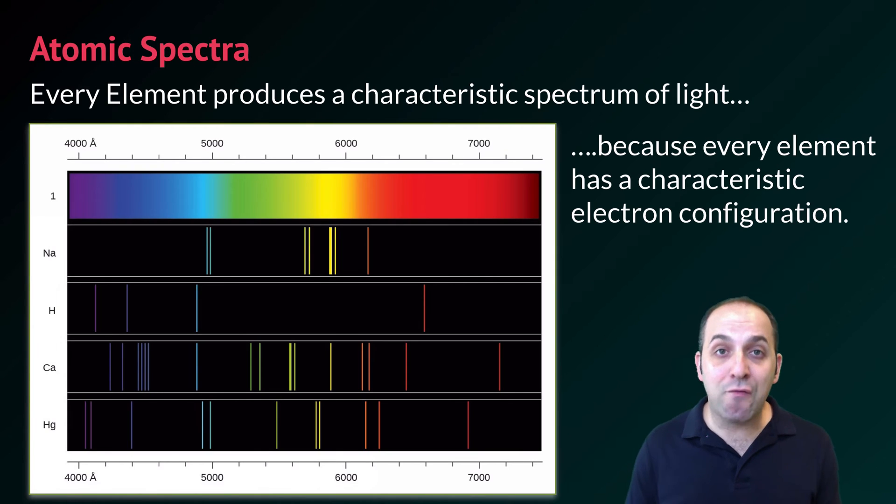We actually see this with every element that we do this to. So every element produces a characteristic spectrum of light. And that's because every element has its own particular electron configuration, something that we'll talk about a whole lot more in depth over the next couple of lessons in this unit. This image is showing you four different elements. And you can see the spectra that each of these elements produces when you subject them to an amount of energy. This is what we would call their emission spectra because it's the energy that they are emitting as their electrons transition from the excited state back to the ground state.